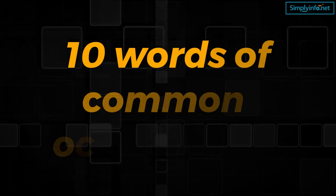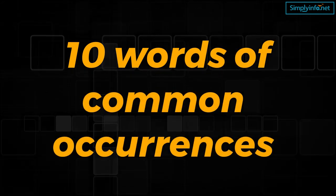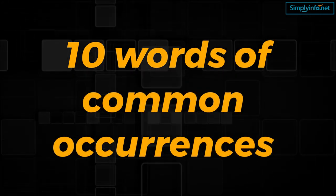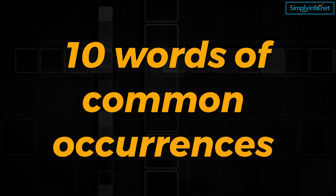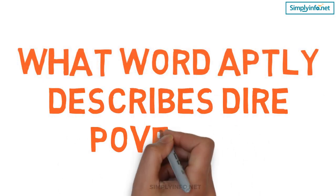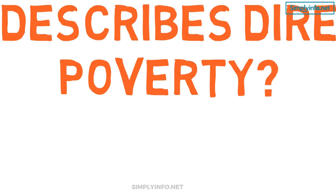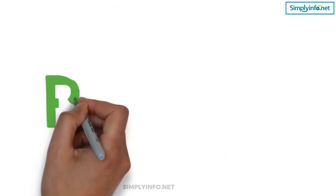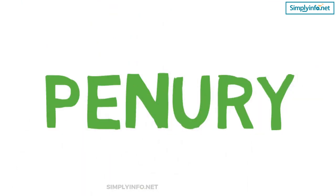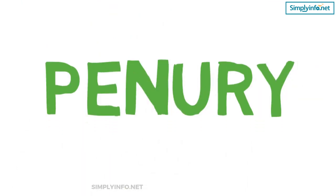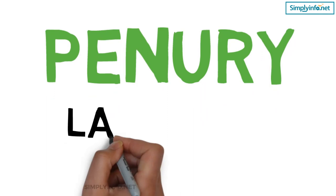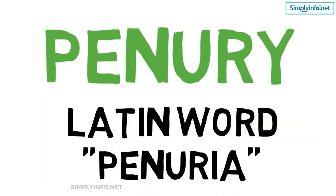Today, let us look into English vocabulary which talks about words of common occurrences. What word aptly describes dire poverty? Penury. Penury is derived from the Latin word 'penuria,' which means need or neediness. It is dire, abject poverty — a complete lack of financial resources.